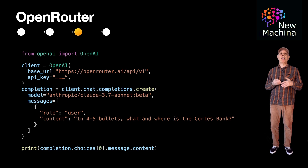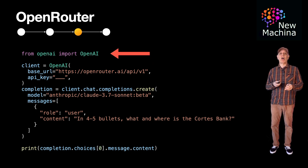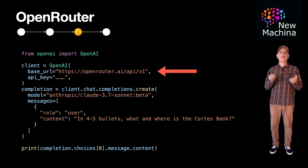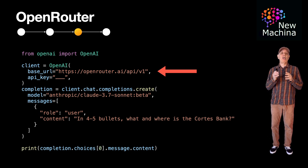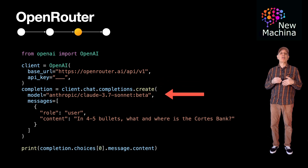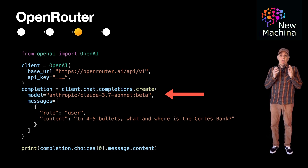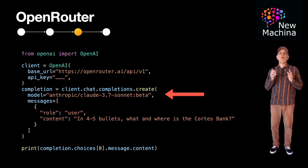In this first Python script, we will integrate with Anthropic's Claude Sonnet 3.7 using OpenRouter. In the first line, we see that we're importing the OpenAI Python module. Next, we instantiate a client OpenAI Python object passing in our base URL and our API key. The base URL is set to https://openrouter.ai/api/v1. The OpenAI Python object will send all of its requests to that OpenRouter API endpoint. Next, we create the Python client chat object. Note the model name: anthropic/claude-3.7-sonnet:beta. This is where we specify to OpenRouter which LLM to use. In this example, I asked the LLM, in five bullets, what and where is Cortez Bank?